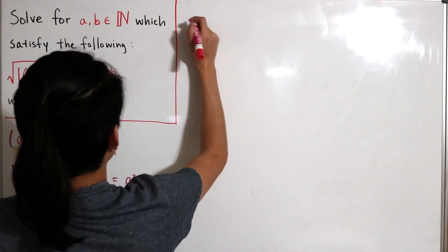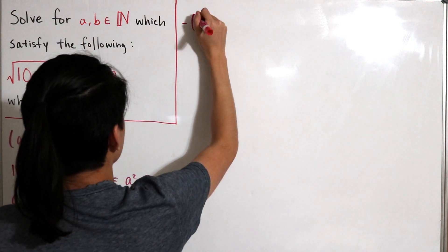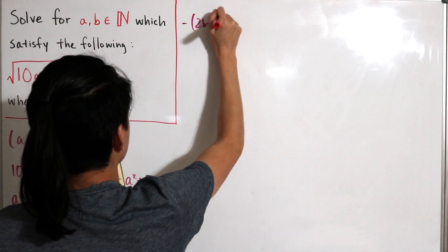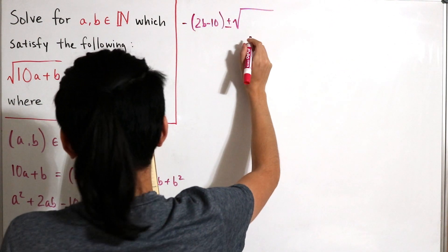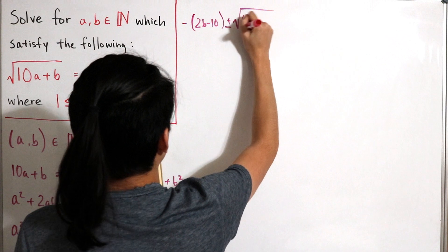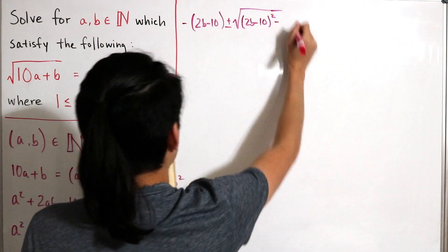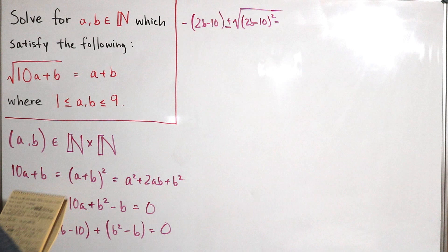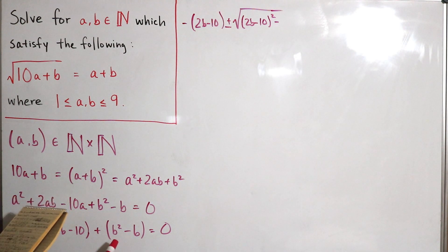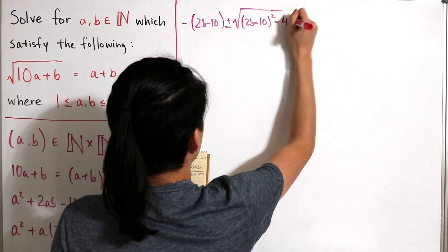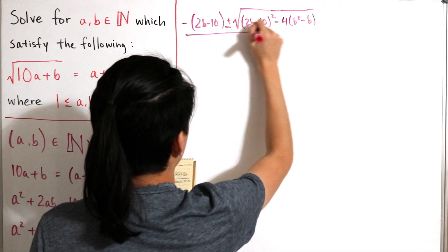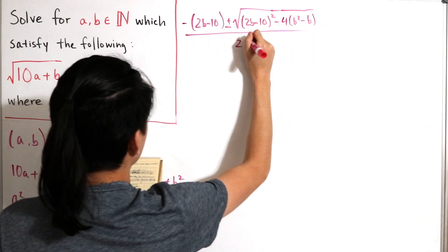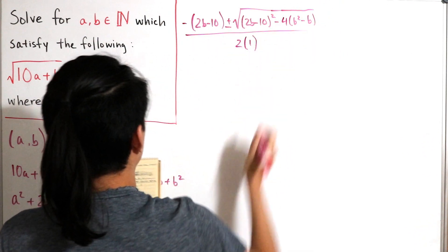So we just plug in those pieces together, so we would have the quadratic formula: negative b plus or minus square root of b squared minus 4ac divided by 2a. We just plug in the correct substitution. So here we have minus 2b subtract 10, then plus or minus the square root of 2b subtract 10 quantity squared, then subtract with 4 times 1 times b squared subtract b, and then that being divided by 2 times 1.